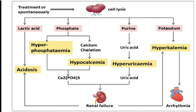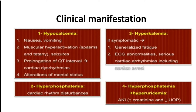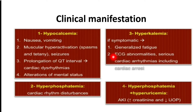Signs and symptoms of tumor lysis syndrome: hypocalcemia can cause nausea, vomiting, muscular hyperactivation — that is spasm, tetany, and seizures — prolongation of the QT interval, cardiac dysrhythmias, and alteration of mental status. Hyperkalemia can lead to generalized fatigue, ECG abnormalities, and serious cardiac arrhythmias including cardiac arrest. Hyperphosphatemia can lead to cardiac rhythm disturbances, and combined with hyperuricemia can lead to acute kidney injury.